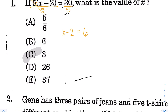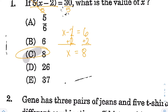Once you divide by 5 on both sides, the equation looks a lot simpler. You have x minus 2 is equal to 6. In the last step, you're going to add 2 to both sides, which is the opposite of subtracting by 2. That will give you 6 plus 2, which is 8 for x, and that's going to be choice C.